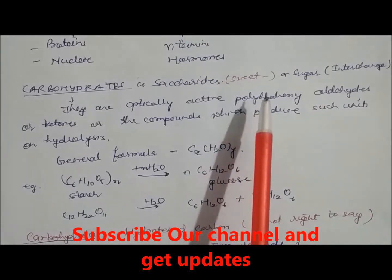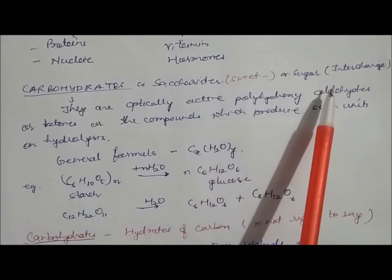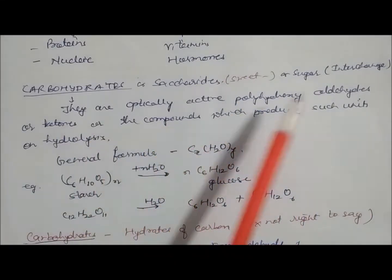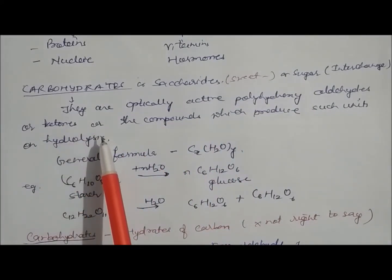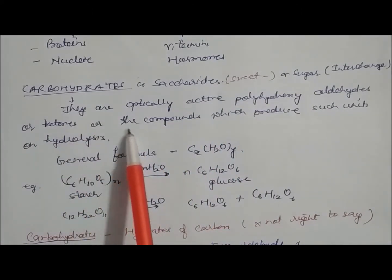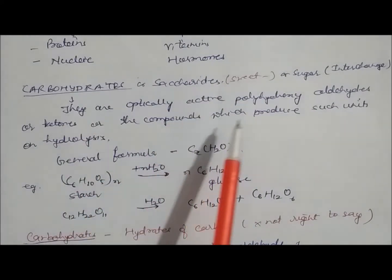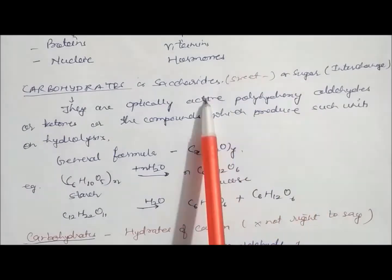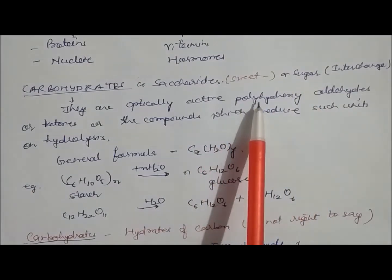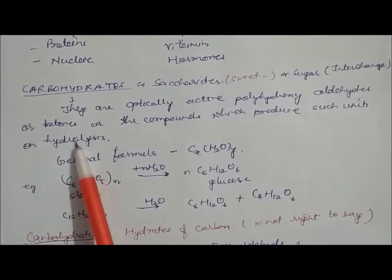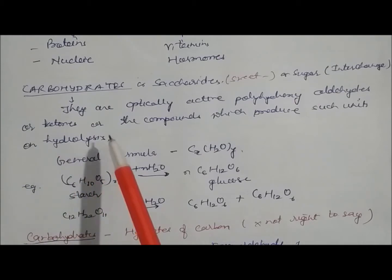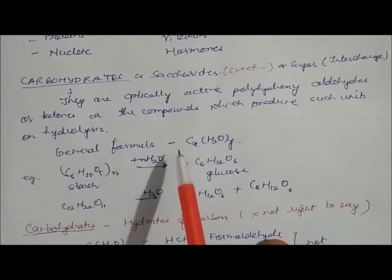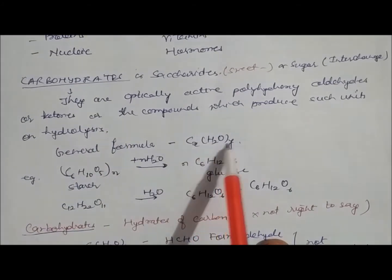In other words, carbohydrates are compounds which produce units having polyhydroxy aldehydes or ketones on hydrolysis. The general formula for carbohydrates is Cx(H₂O)y. For example, starch on acid hydrolysis converts into glucose.